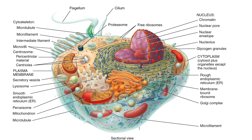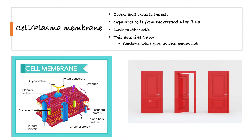I also want to mention that the inside of the cell is called cytoplasm. The cytoplasm is basically the fluid or gel-like structure inside the cell, and then you have the organelles inside. The cell or plasma membrane acts like a door — it covers and protects the cell, and it basically separates the cells from the extracellular fluid. Even though there's fluid inside the cell, outside the cell there's also fluid. The plasma membrane also helps to link other cells to each other and acts like a door, controlling what goes in and what comes out.